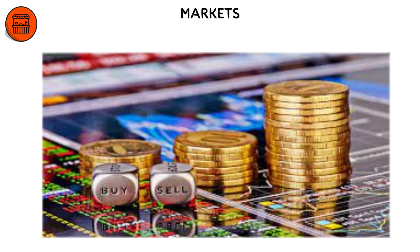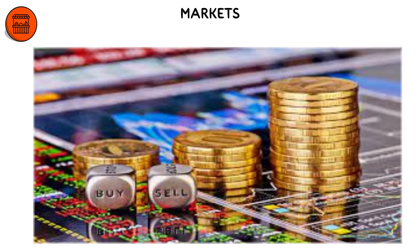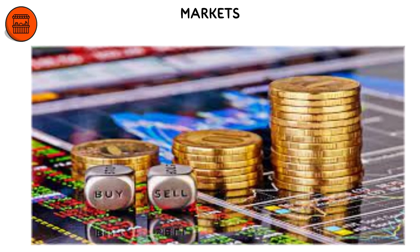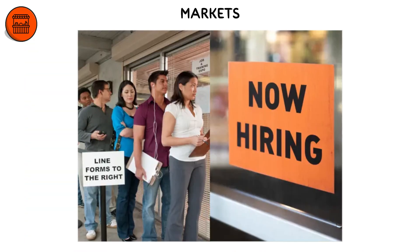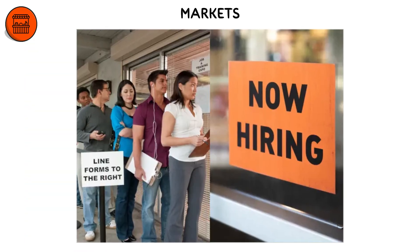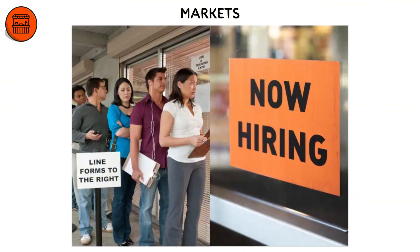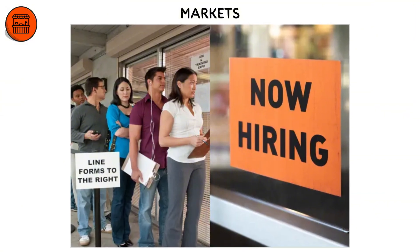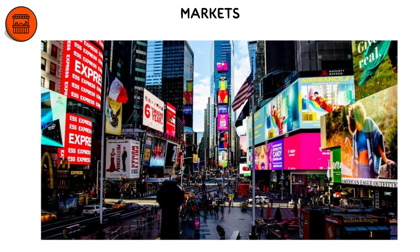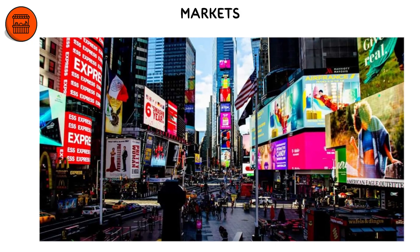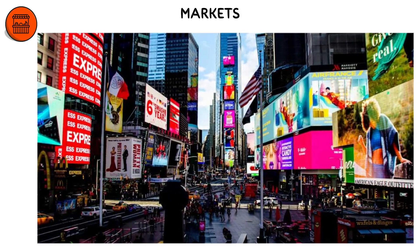Prices act as signals, rising when demand outpaces supply and falling when goods are abundant, guiding both consumers and producers to make efficient decisions. There are many types of markets, including product markets, labor markets, and financial markets, each operating under different levels of competition and regulation.